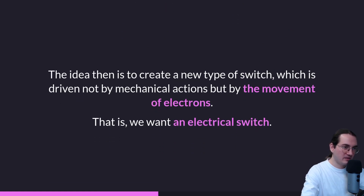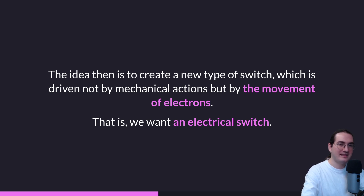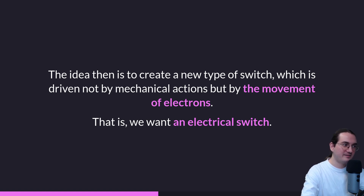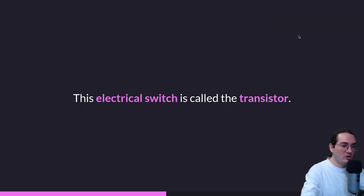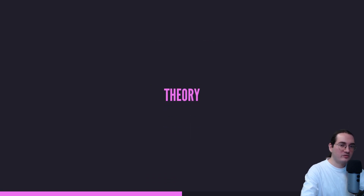We need something faster. The idea is to create a new type of switch — one not controlled by mechanical actions but by the movement of electrons: an electrical switch. The idea of a switch is simple and intuitive; what's complex is how we control the mechanism. Instead of mechanical actions, it is an electrical switch governed by electricity. And this is the main idea of the transistor — the transistor is the electrical switch.